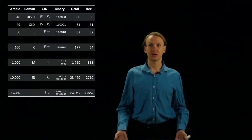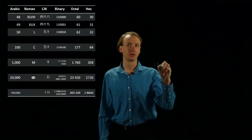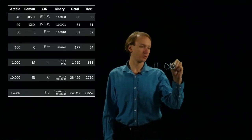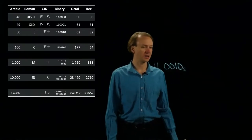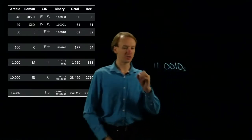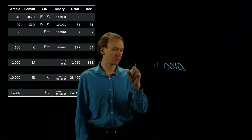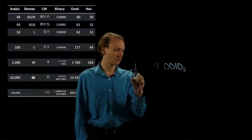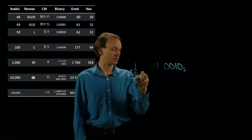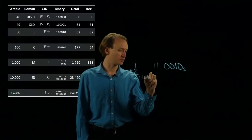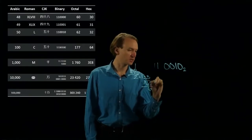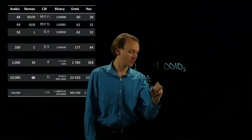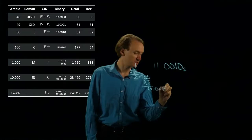This time we'll try some harder examples. Starting with this number in binary, I'll take the 1, multiply by 2, giving me 2, then add the second bit, which gives me 3. Multiply by 2 gives me 6, then add the third bit, which gives me 6.